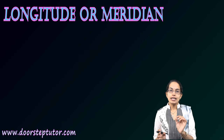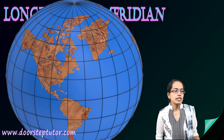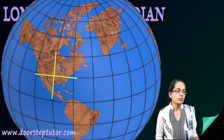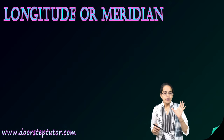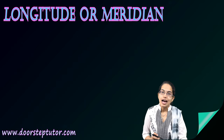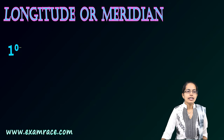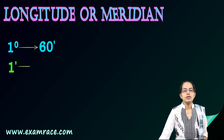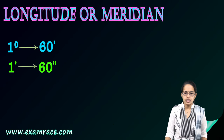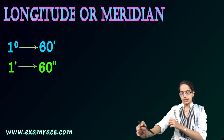These help in understanding location and direction. Wherever you have the intersection of latitudes and longitudes, I can identify the exact place on the earth. Whenever we talk about latitude or longitude, we are talking about degrees. One degree is further subdivided into 60 minutes and one minute is further subdivided into 60 seconds.